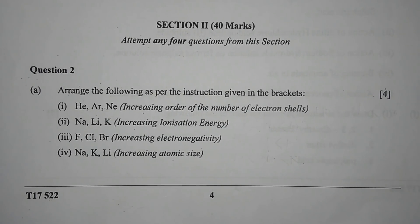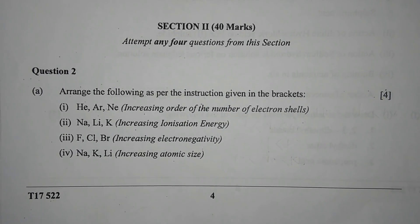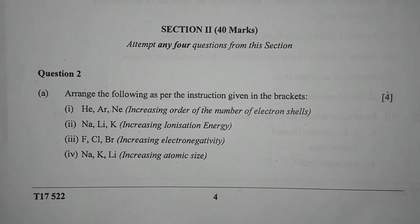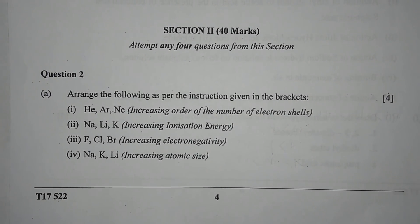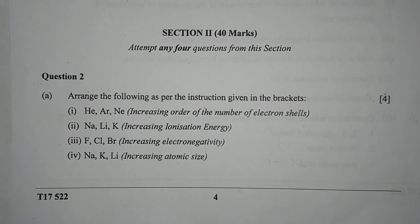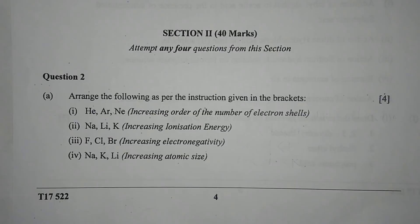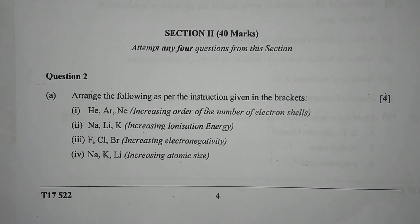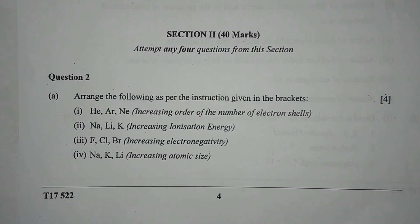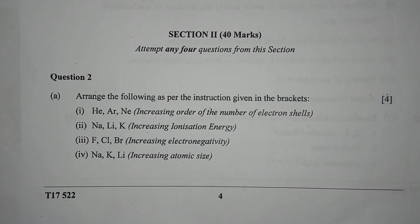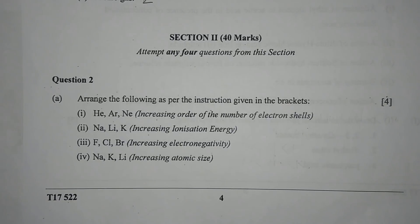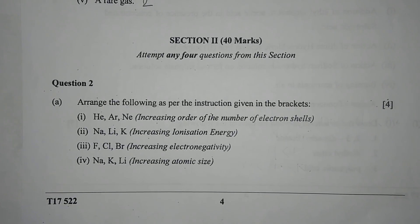Hey guys, we are back with the second section of ICSC 2017 Chemistry Paper. The first part of the video link will be on the top right corner. Without any further ado, let's get started. Section 2 is 40 marks — you have to attempt any four questions, but I am going to solve all six for you.